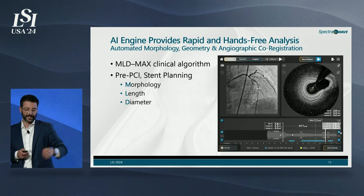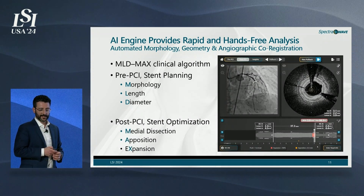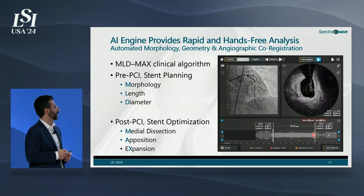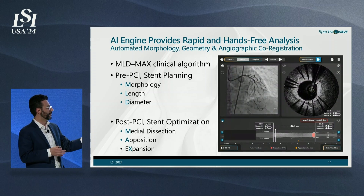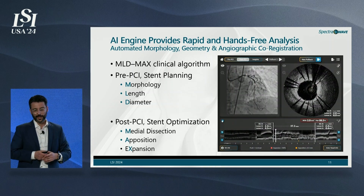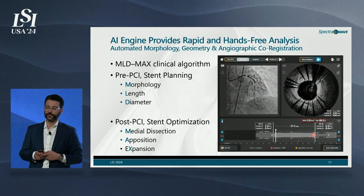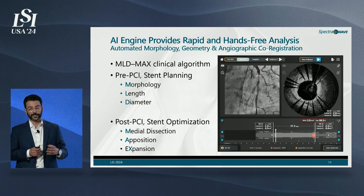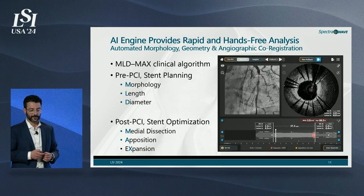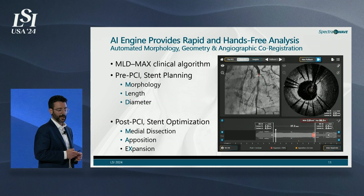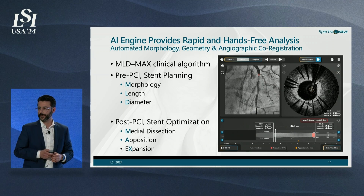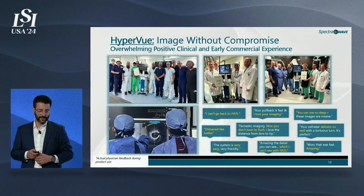Once stent sizing is determined, the system shows exactly where those flags are in the angiographic image used to guide stenting. After stent placement, the physician re-images the vessel to confirm optimized placement, verify no vessel wall dissection, confirm good stent apposition to the lumen, and verify full expansion to reference diameters. If any region lacks expansion, the system automatically highlights it and overlays it on the angiographic image so the physician can dilate accordingly.